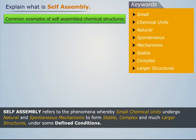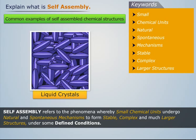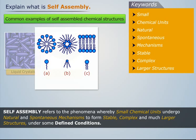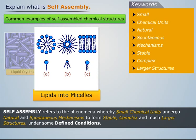Some common examples of self-assembled chemical structures are liquid crystals, self-assembled monolayers, organization of lipids into micelles and polymers adsorbed onto surfaces in layers and multi-layers.